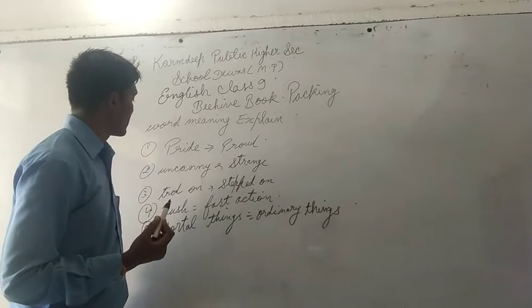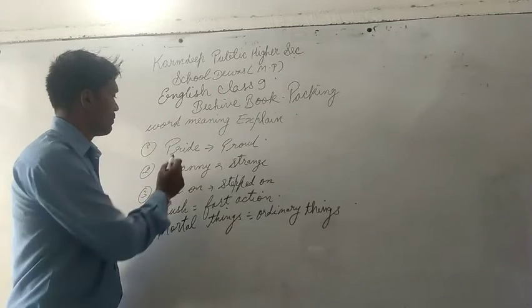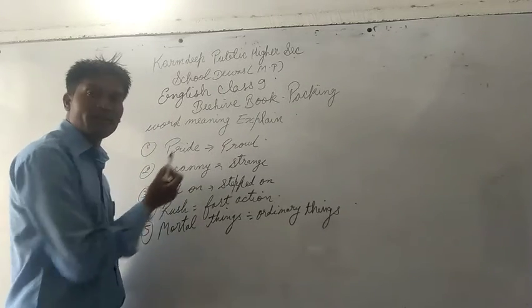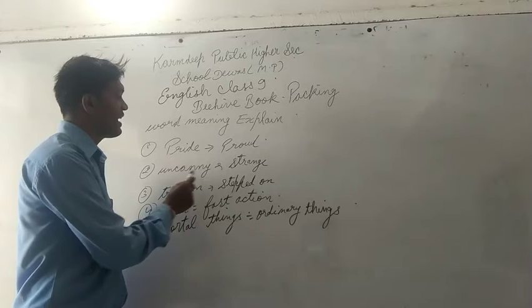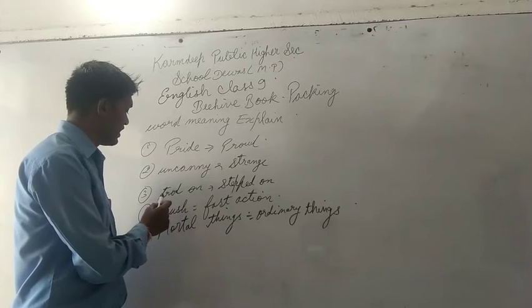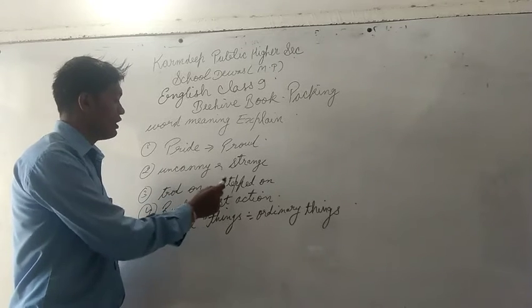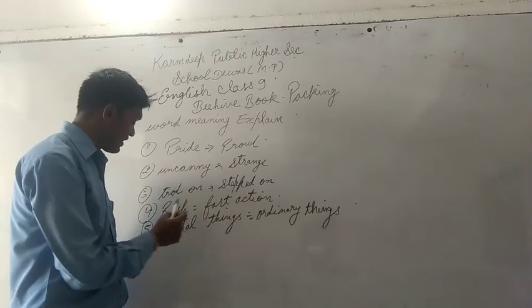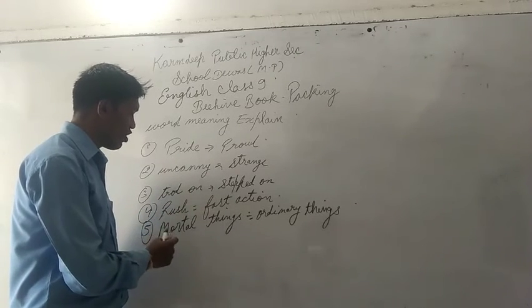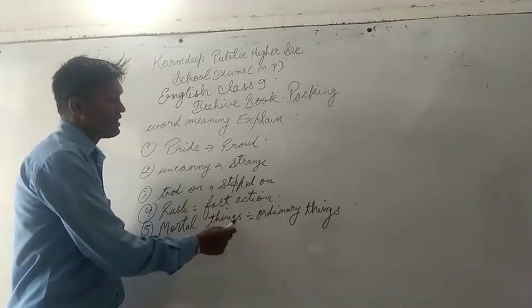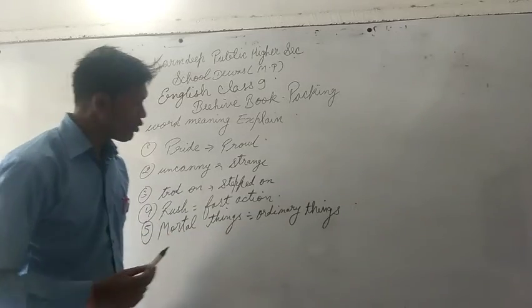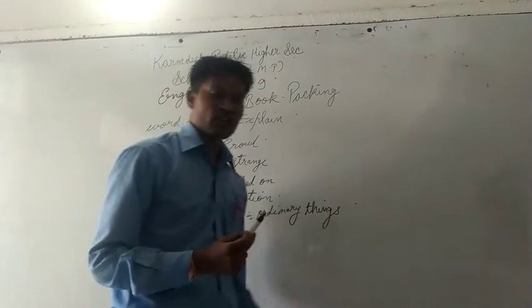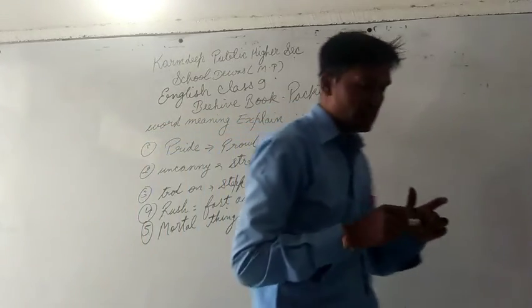Let us start. First: Pride — means proud. Uncanny strength. True dawn. Stay awkward. Rush — very fast. Action. Mortal things — ordinary things. So here is a collection of some words.